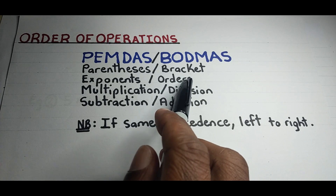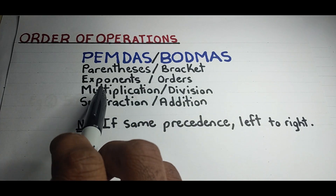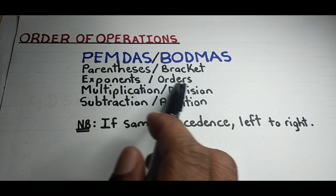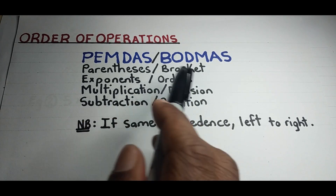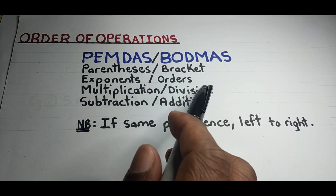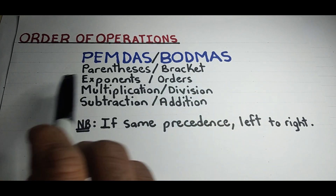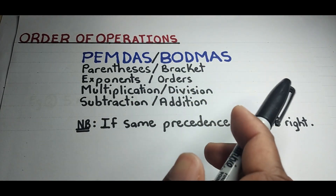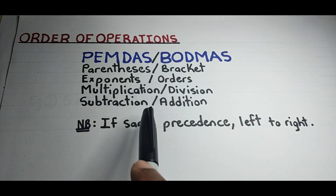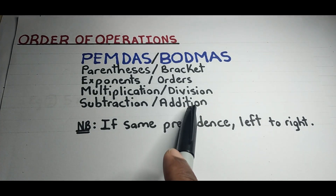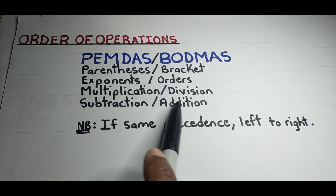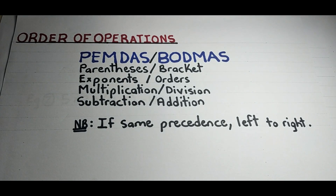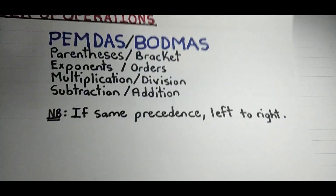Parentheses and Brackets are the same thing; Exponents and Orders are the same thing. Multiplication and Division both have the same precedence — so if you have both in the same problem, work from left to right, whichever one comes first. The same applies to Addition and Subtraction: both have the same precedence, so work those from left to right as well.